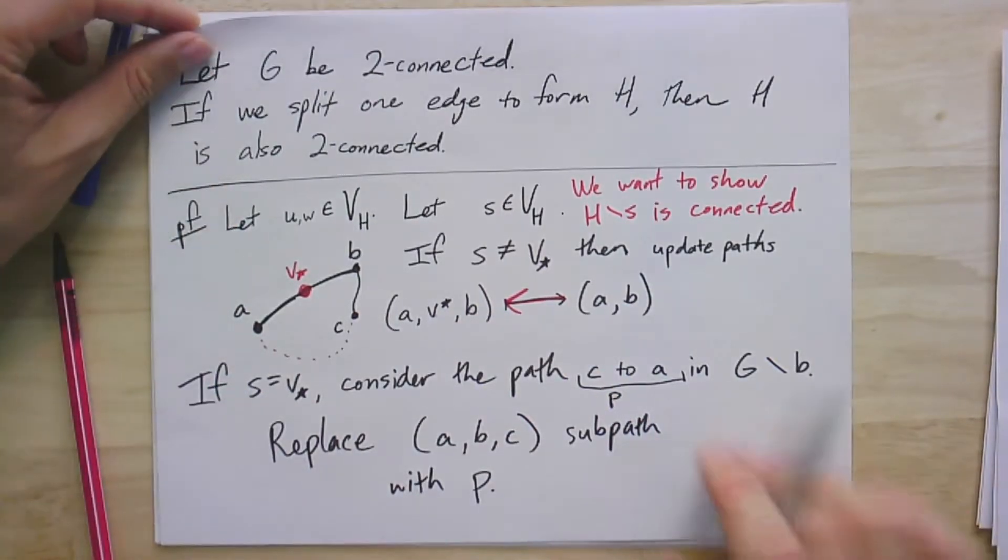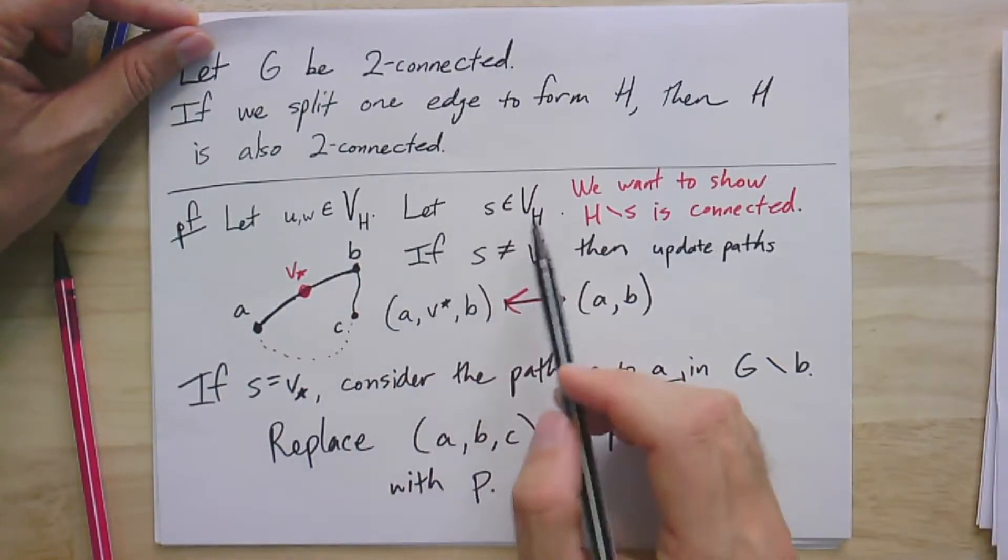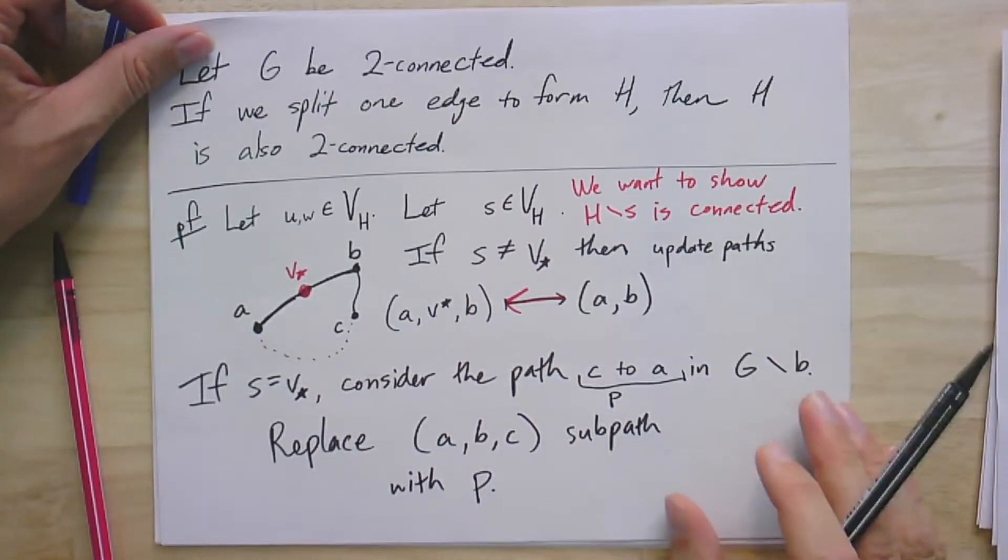And so, that gives us a new path by doing a little bit of surgery, cutting out this little bit of a path and gluing in a new one. So, it shows that no matter what S we remove, whatever vertex we remove from this new graph H, we still have a path between every pair of vertices. And so, it's still two connected.